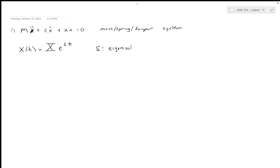The s value, if we figure out what it is, is going to tell us exactly how this system behaves as a function of time. s is called the eigenvalue of the system, and in general it is complex-valued.